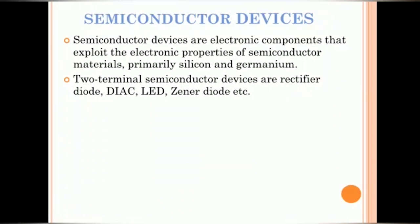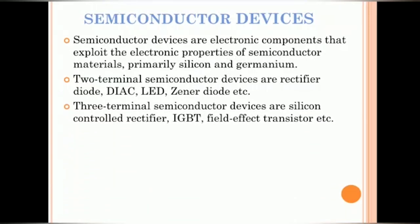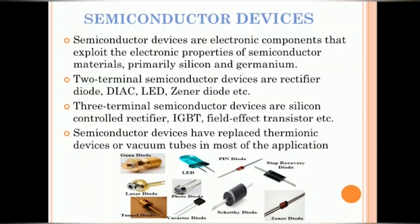Semiconductor devices have replaced vacuum tubes in most of the applications. Few of the two terminal semiconductor devices are rectifier diode, DIAC, LED, GENA diode and so on. Similarly, three terminal semiconductor devices are silicon controlled rectifier, IGBT, field effect transistor and so on. You can see the images of various two terminal and three terminal semiconductor devices.